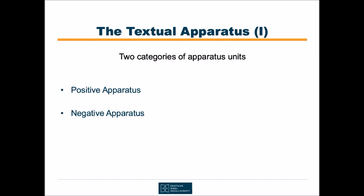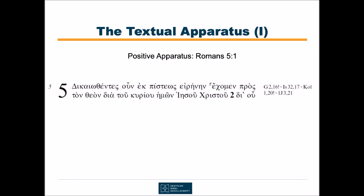The UBS Greek New Testament, for comparison, only knows positive apparatus. Positive apparatus means that apart from the attestation for the variant reading or readings, also the attestation for the text reading is displayed. Let me show you an example. In Romans 5 verse 1, Paul claims that we as Christians have peace with God. Or does he?